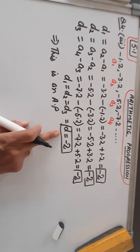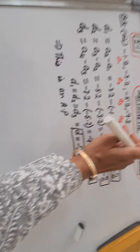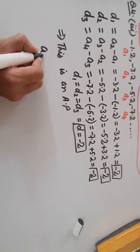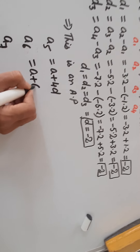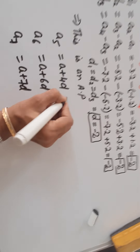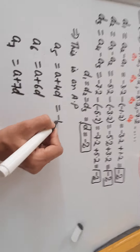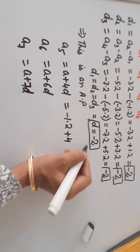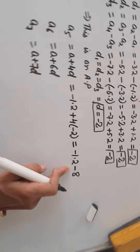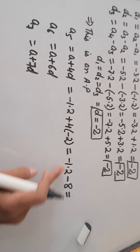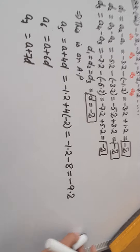Now the first part is done and we've found the common difference. Next we find the three more terms. Up to 4 terms are given, so we write A5, A6, and A7. A5 is A plus 4D, A6 is A plus 5D, A7 is A plus 6D. The first term A is -1.2, so A5 is -1.2 plus 4 into (-2), which gives -1.2 plus (-8). Both are negative so we add: -9.2.